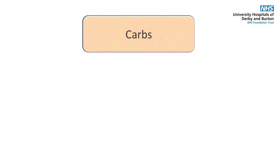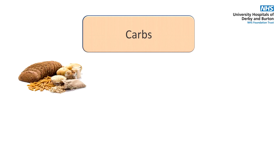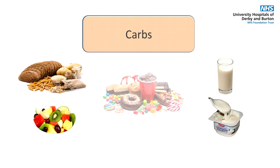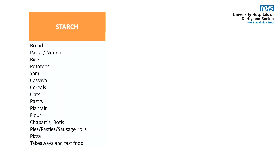So where do we find carbs in the diet? Foods that contain carbs can be grouped into starchy foods and those that contain sugar. Foods that contain starchy carbohydrate include bread, rice, potato, pasta, cereals, oats and other foods made from flour such as pastry, chapattis and pizza.